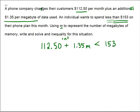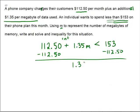So this sets us up with an inequality. Let's try to solve the inequality. Subtract 112.50 from both sides. 1.35M is less than 153 minus 112.50. That is 40.5.